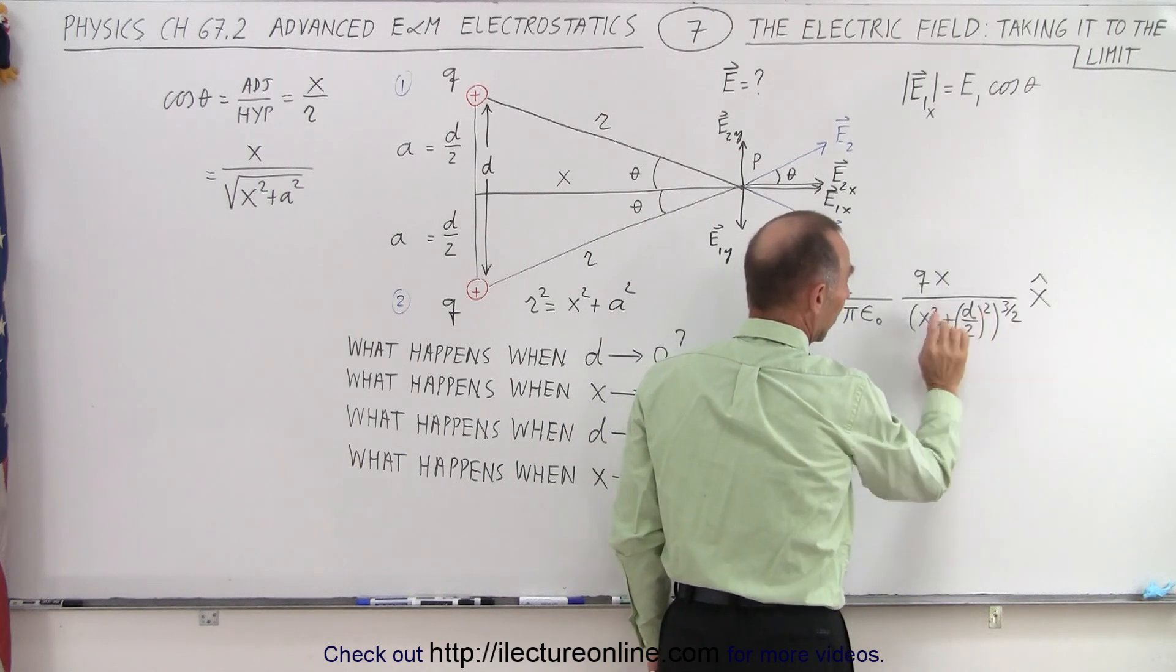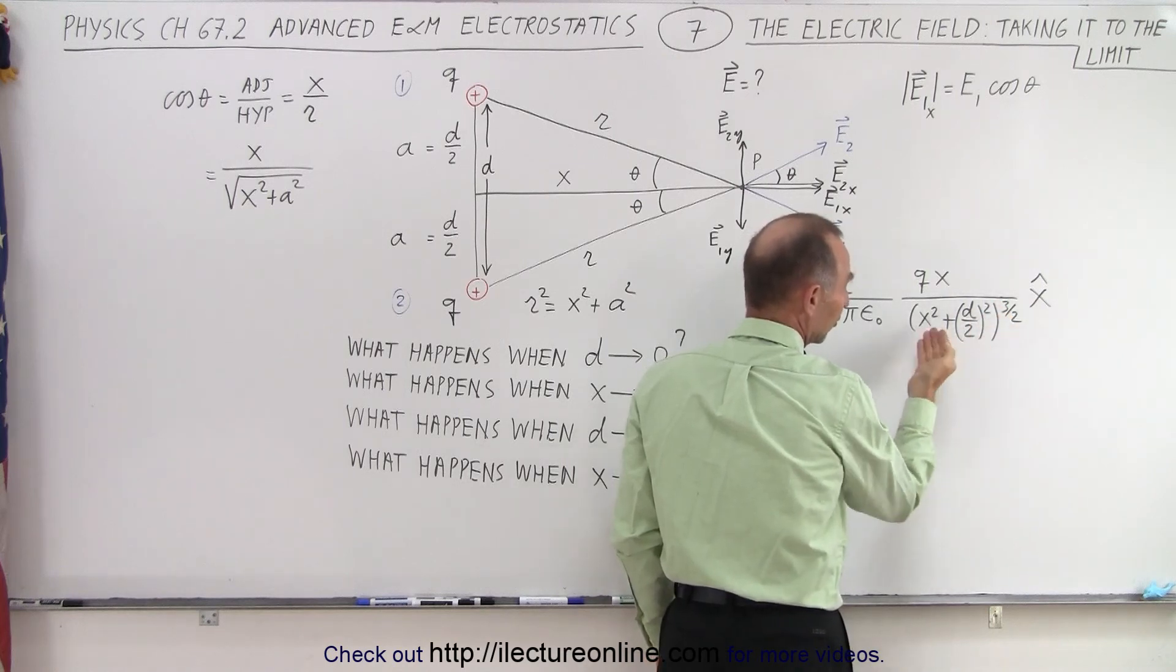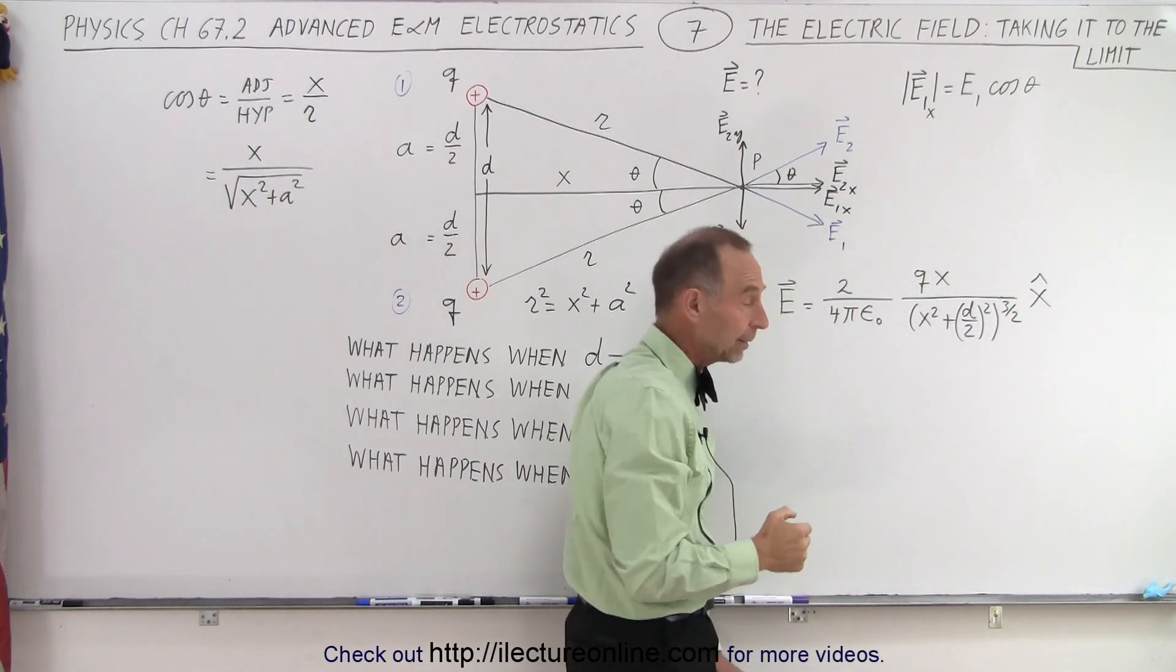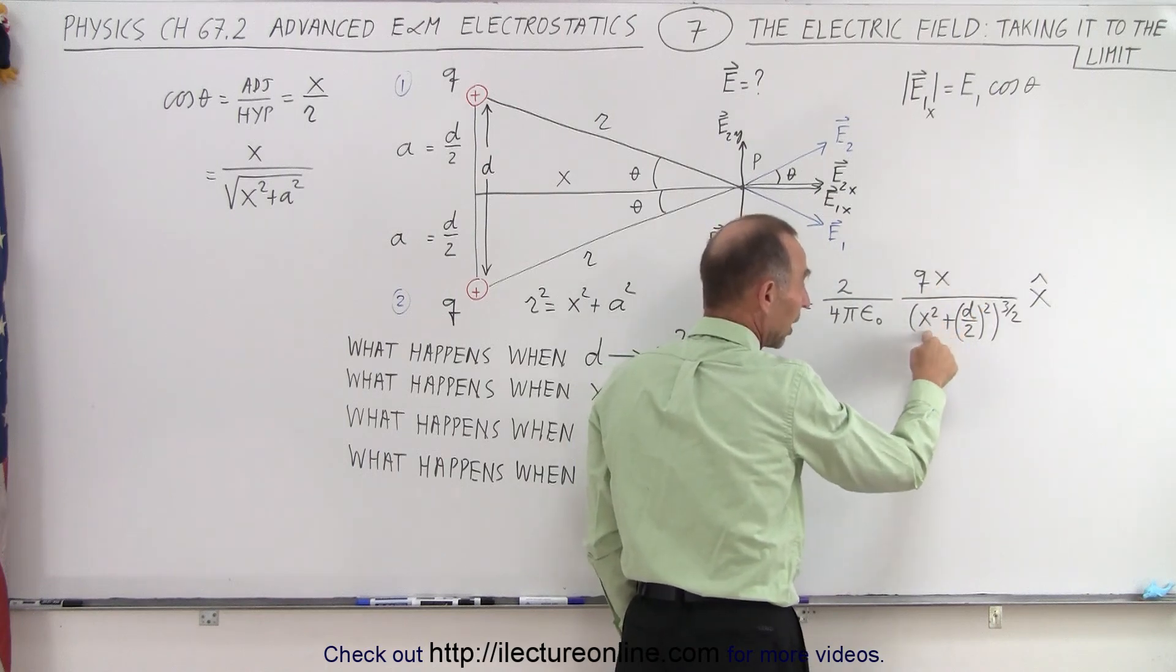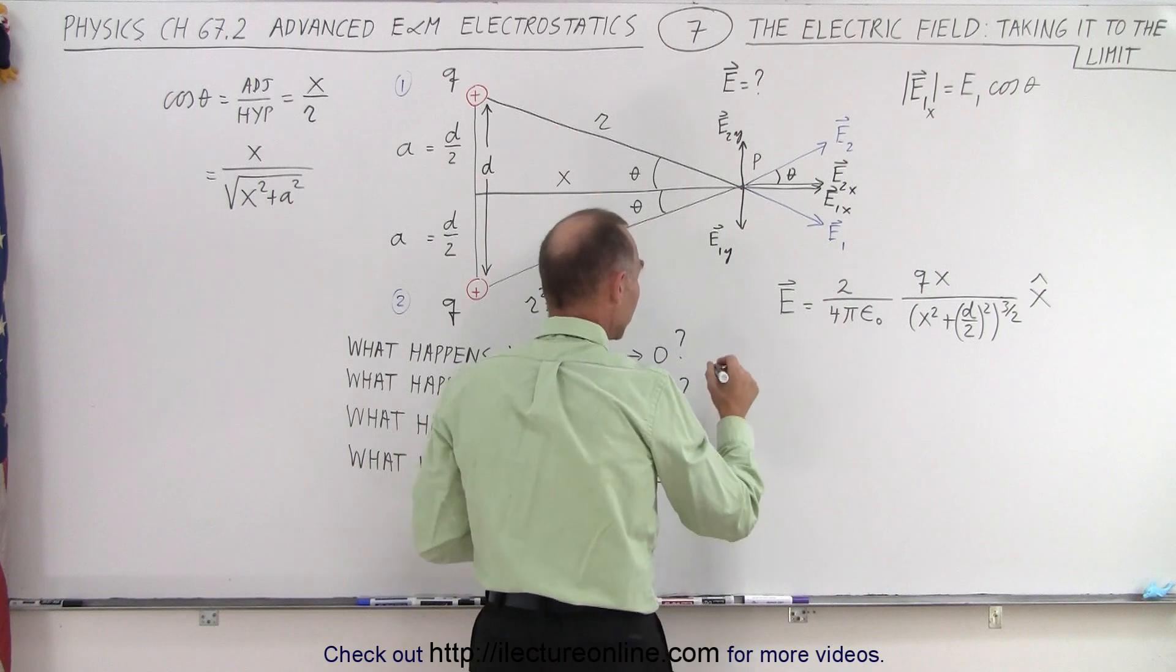Now how would that affect the equation? Well let's go over here and let d go to 0. When d goes to 0 this disappears. We end up with x² raised to the 3/2 power which is essentially x³ in the denominator.